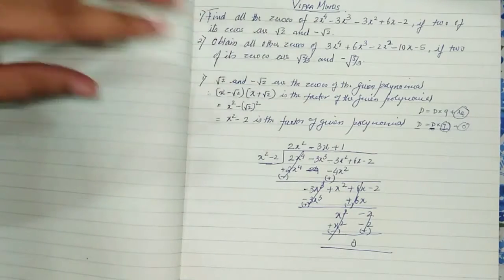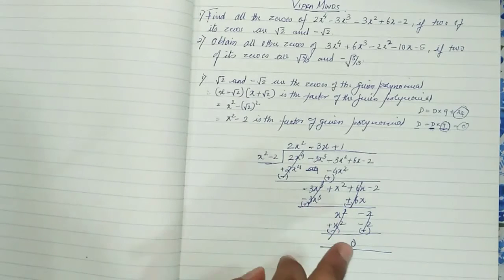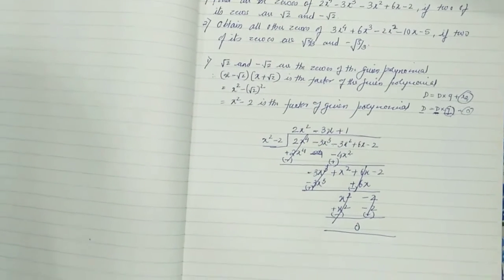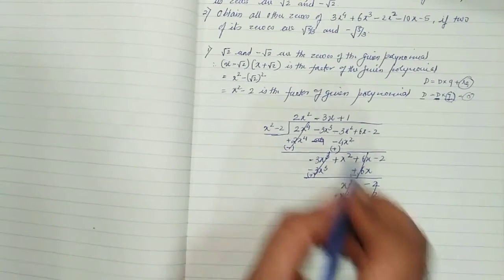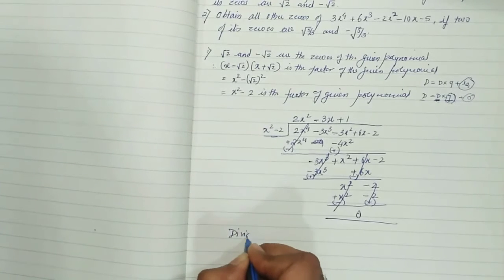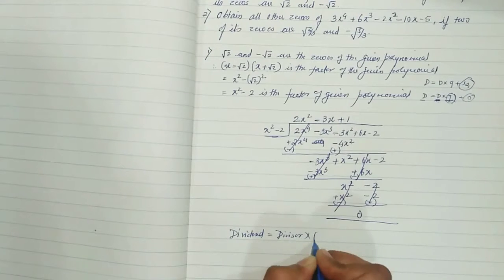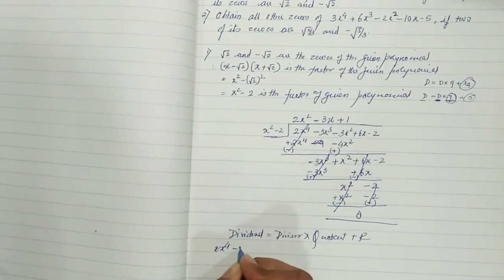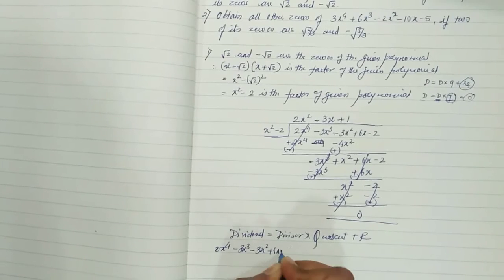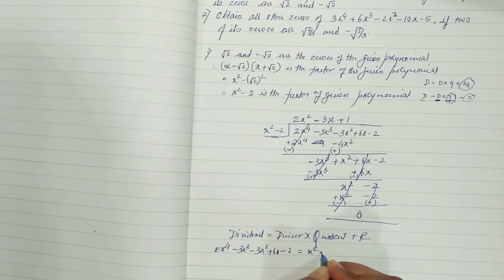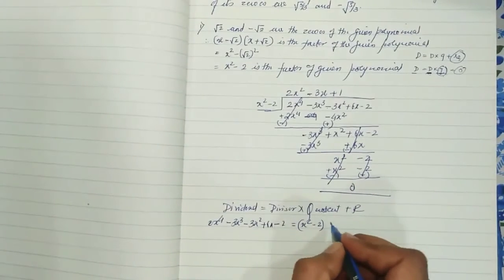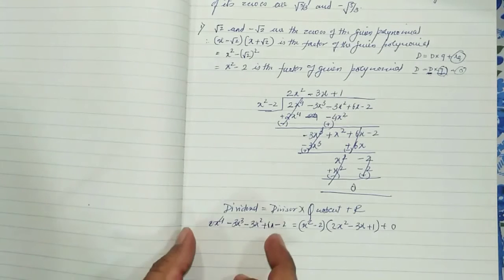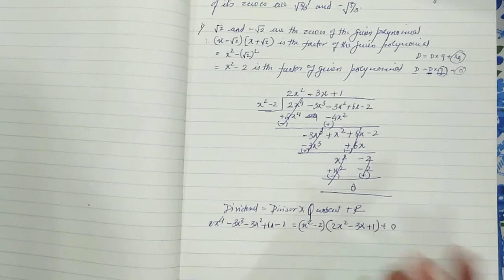Since the remainder is 0, we have confirmed that x² - 2 is indeed a factor. Using dividend = divisor × quotient + remainder with remainder 0: 2x⁴ - 3x³ - 3x² + 6x - 2 = (x² - 2)(2x² - 3x + 1). So the quotient is 2x² - 3x + 1.